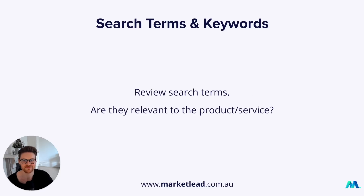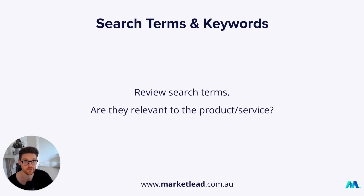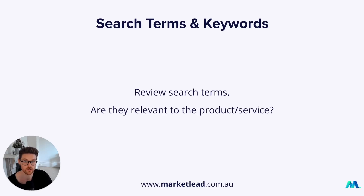Now we can look at the account. After reviewing pages and conversions, I start by reviewing the search terms. Are they relevant to the product or service? When accounts are going well, they are relevant. When they're not, there's a lot of trash and rubbish traffic coming in. Then review the keywords — are they actually relevant to the product or service? The search terms are only reflective of the keywords. If you've got poor, too many, or the wrong keywords, you'll only get a certain type of traffic. It's about reverse engineering: the input is the keywords, the output is the search terms. This is probably the most important thing in Google Search.